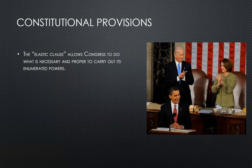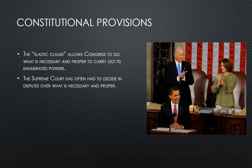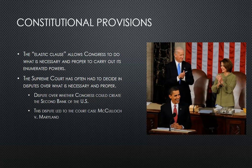Constitutional provisions. The elastic clause allows Congress to do what is necessary and proper to carry out its enumerated powers. The Supreme Court has often had to decide in disputes over what is necessary and proper, such as the dispute over whether Congress could create the Second Bank of the United States — this led to the court case McCulloch v. Maryland.